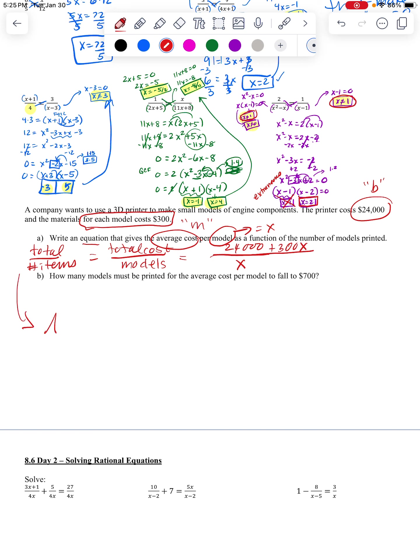So I'm going to write this down here where I have more room. My average cost is going to be my total cost. So that's $24,000 for the startup materials, plus $300 per model over the number of models. That's going to be the average cost per model. That's the equation.